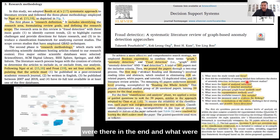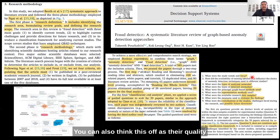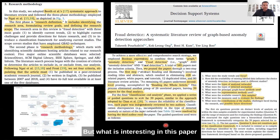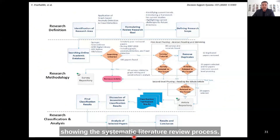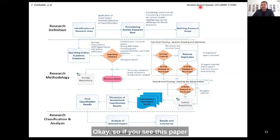What were their questions that they wanted to answer - you can also think of this as their quality criteria, and finally the structure of the paper. What is interesting in this paper is this figure here, showing the systematic literature review process: how you have started your research, the different stages of that, and explaining everything in detail.